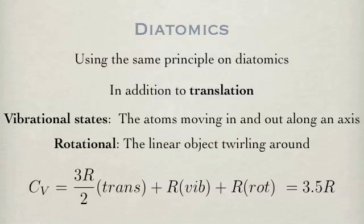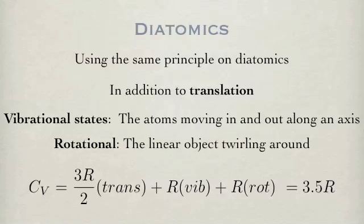As described above, the diatomic molecule has a total of 7 degrees of freedom, each contributing R over 2 to the heat capacity. The heat capacity is expected to have a value of 3.5R.